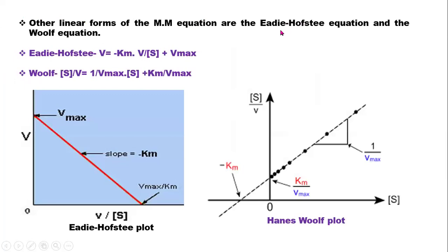There are other linear forms. The Eadie-Hofstee equation is given as V = −Km × (V/[S]) + Vmax. In the form y = mx + c, V is the y-axis, −Km is the slope, V/[S] is the x-axis, and Vmax is the intercept.